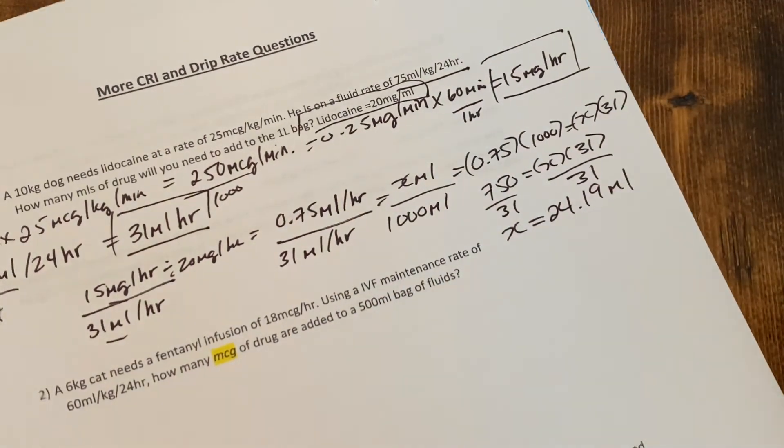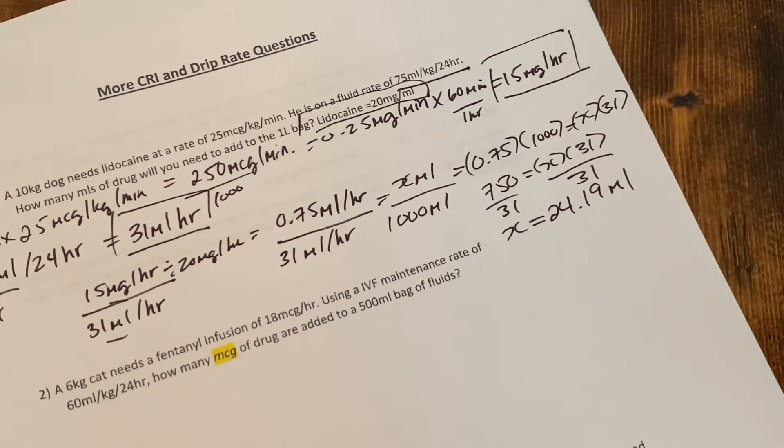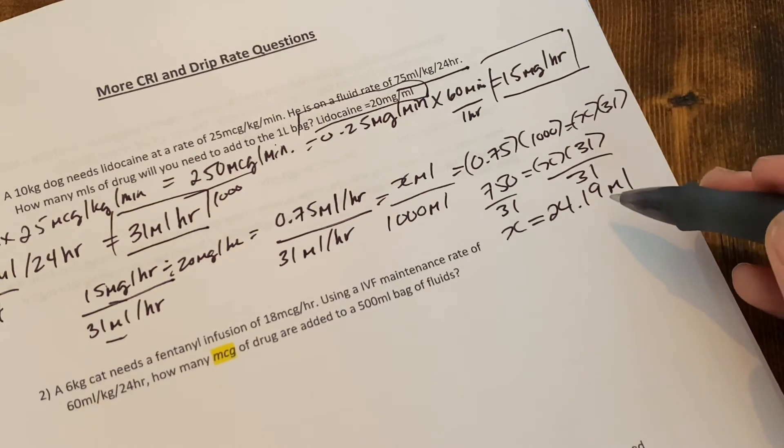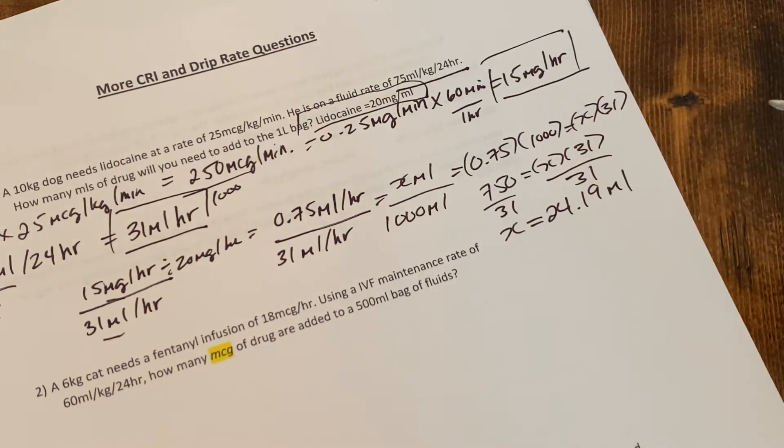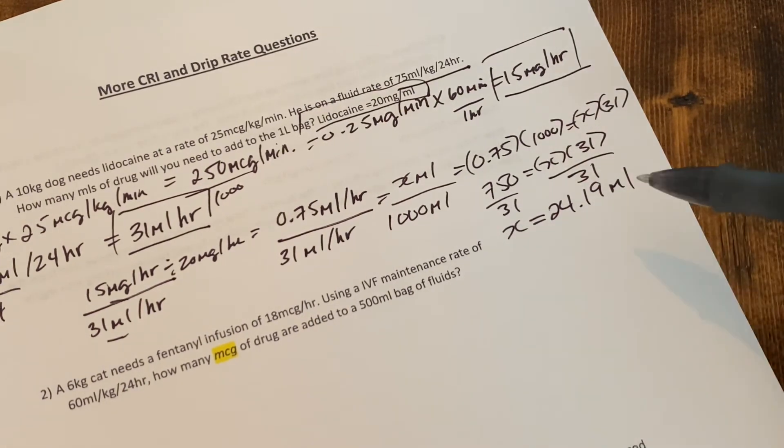So depending on what you're doing and adding to, you could just round this up to 24.2. Since it's going into a liter bag, it's probably safe to do 24, but because everything's precise, we're just going to keep it at 24.19.